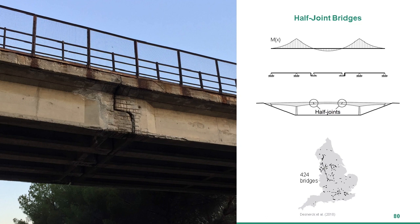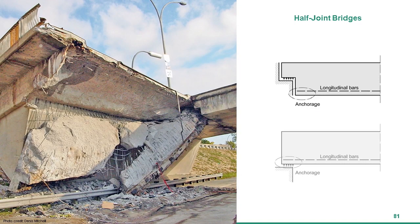There is something intuitive about the concentration of stresses at the inner corner of the nib, which has been the focus of many studies. But one critical aspect has been overlooked: compared with a conventional support, the anchorage of the longitudinal bars at a half joint has no transverse pressure from the bearing, which would normally confine and protect the anchorage from deterioration.